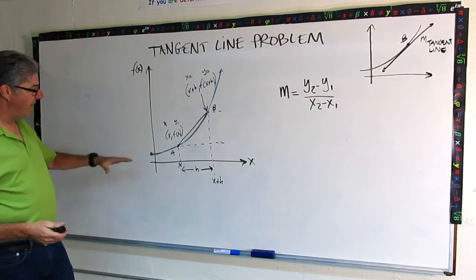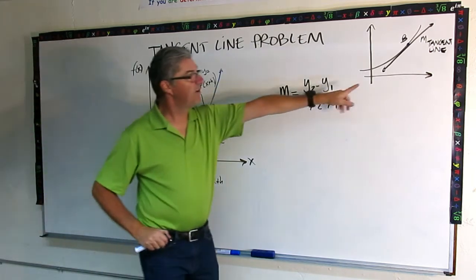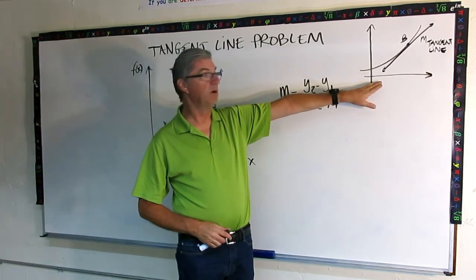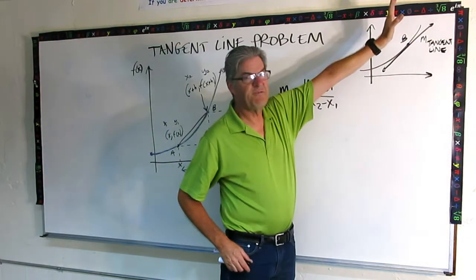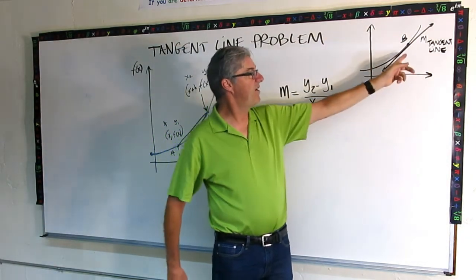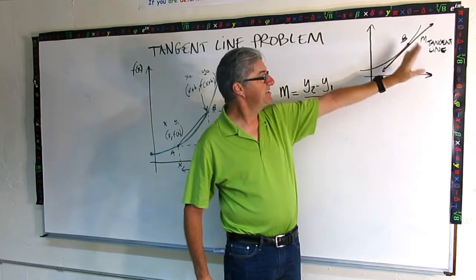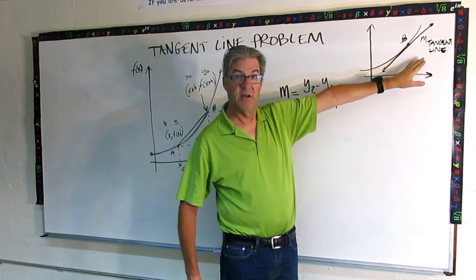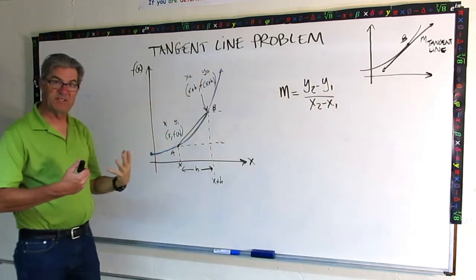So let's get started. Let's take a look at this graph first. Here's the simplified version of what we're looking for. We've got some increasing function, probably exponential, and we have a point B, and we want to find the slope of the line tangent at B. So this is essentially what we're trying to do here. Now let's take a look and tease out the details.